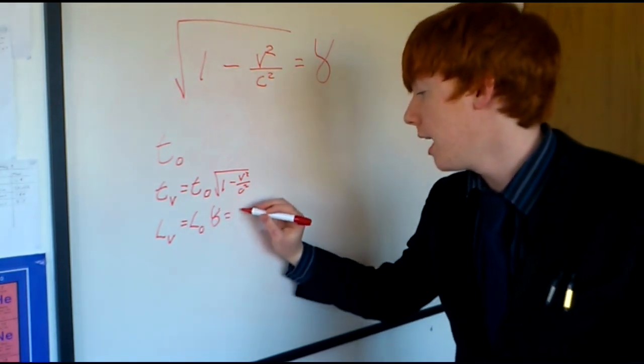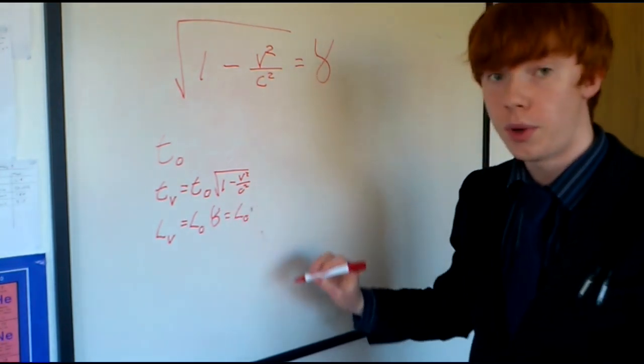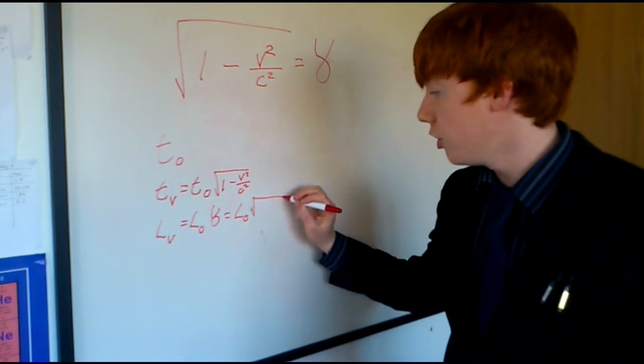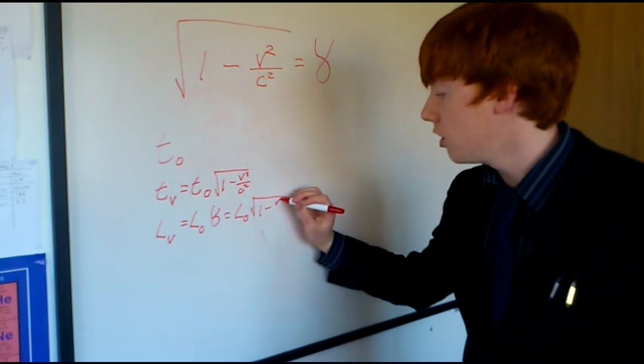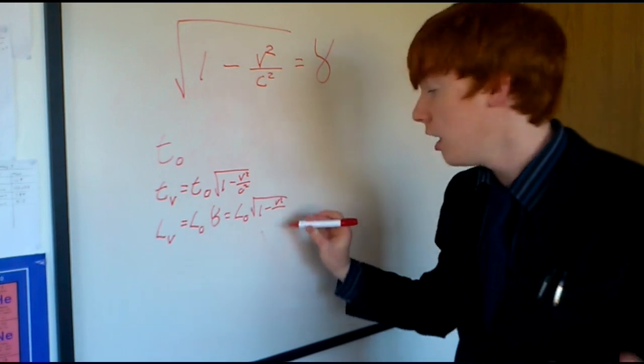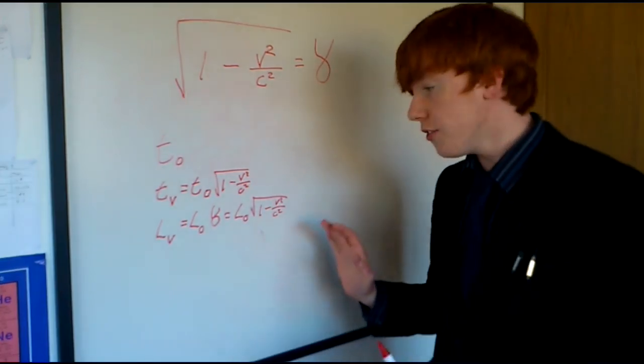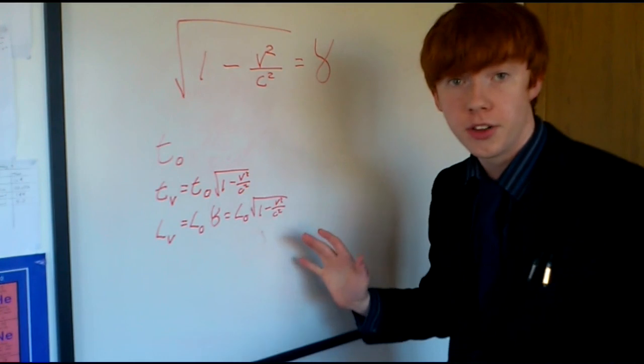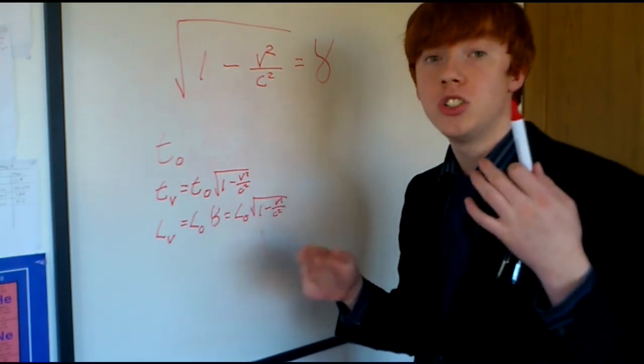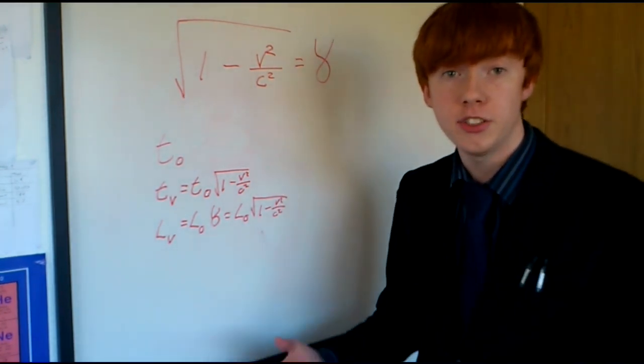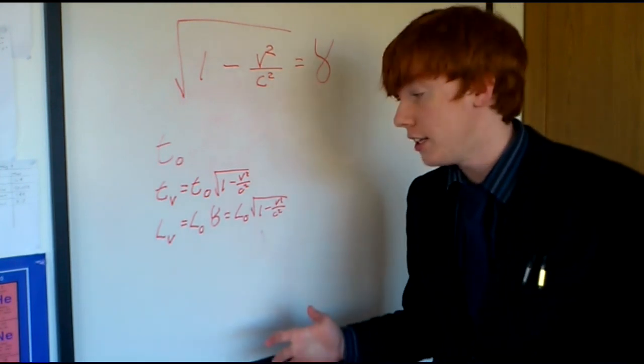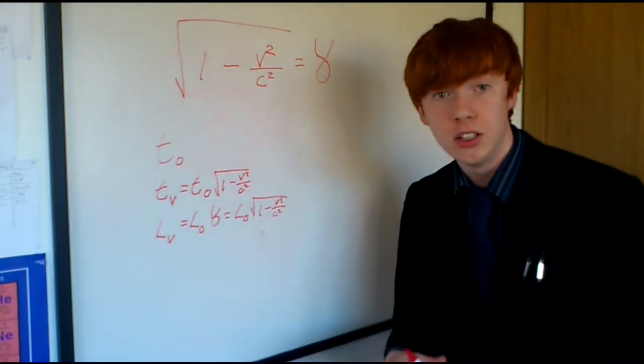And the same sort of thing that we just did to time applies with lengths. So, say that's the length of something while you're moving. That is the same as the length of something while you're still, multiplied by gamma. Which is the same as the length of something while you're still, multiplied by the root of one minus the velocity squared, all divided by the speed of light squared.